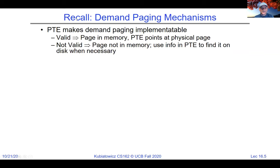This is a good illustration of why LRU is often a good approximation for Min — though not always the same. Min gives 5 faults versus 7 for FIFO. Min brings in the page not referenced farthest in the future, and in this case LRU would make the same decision.